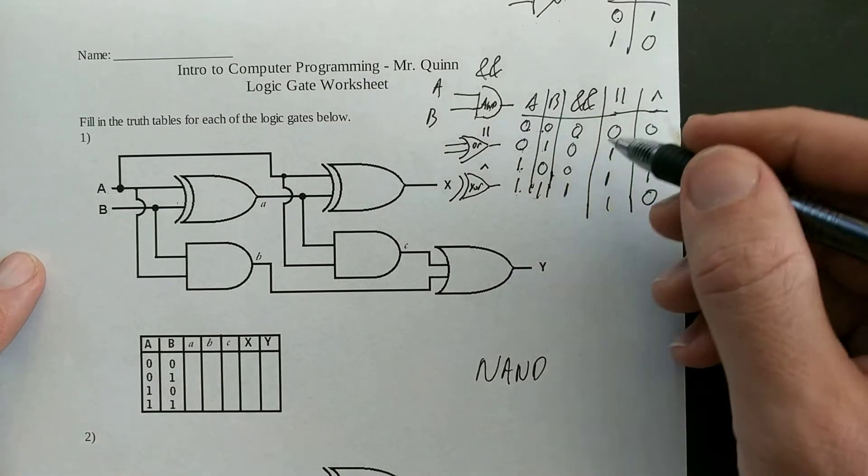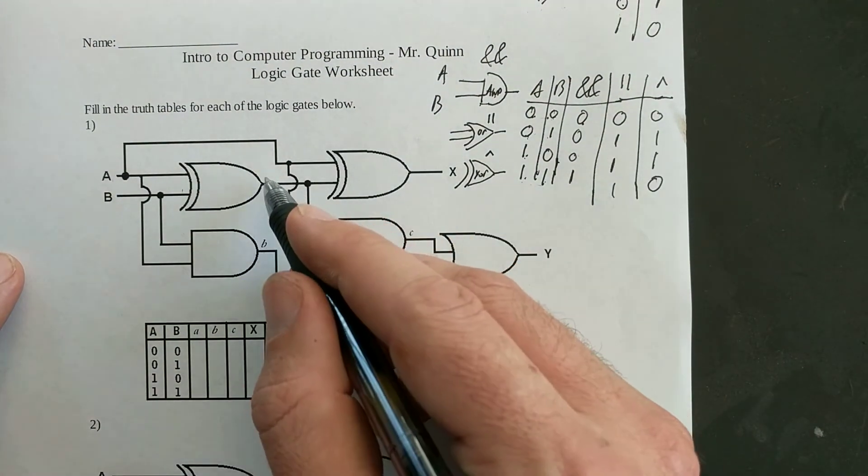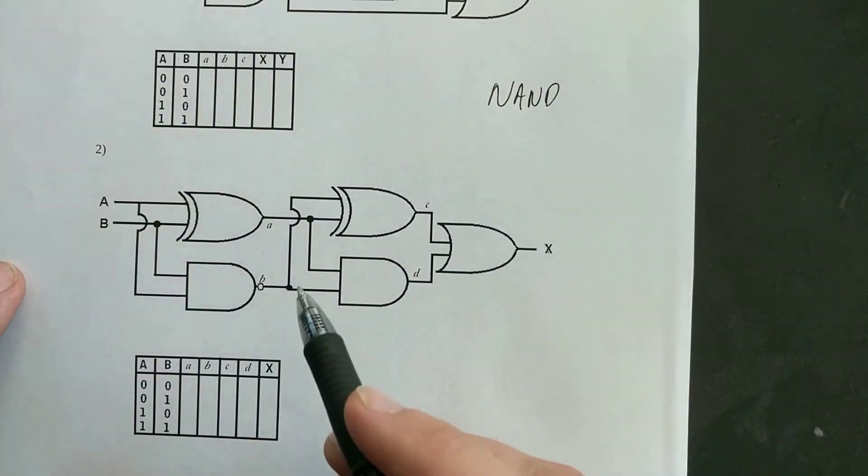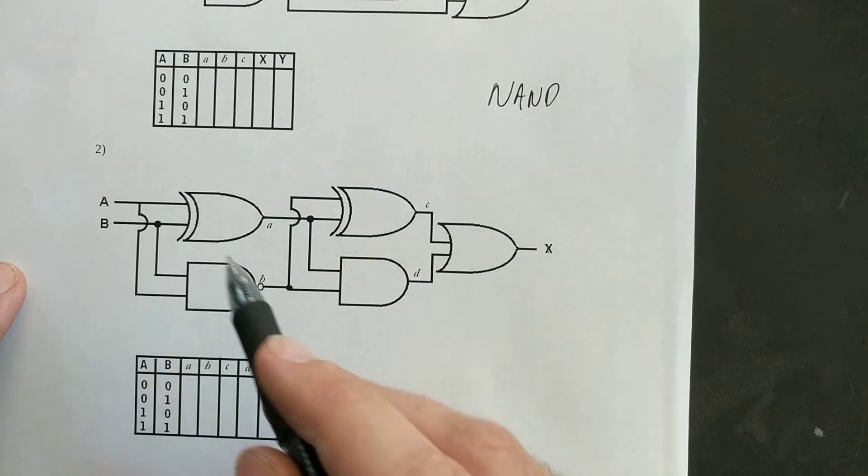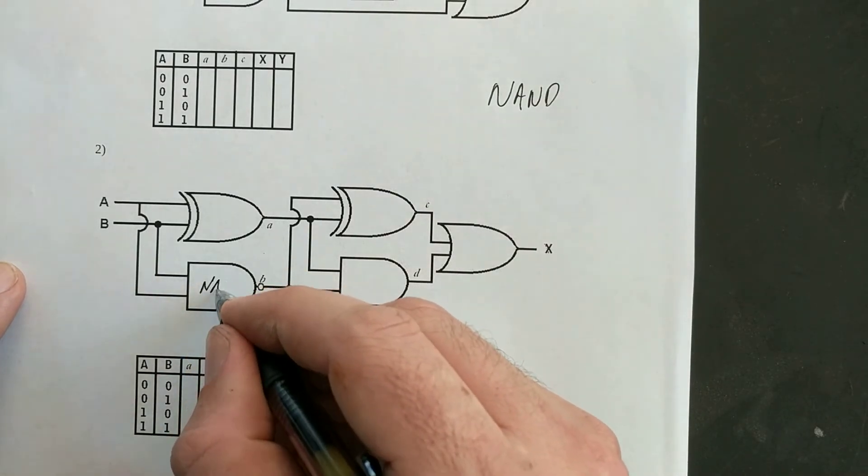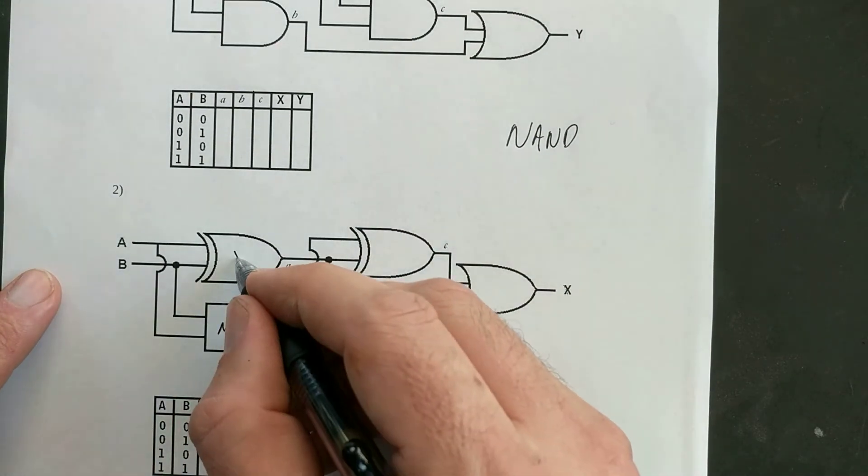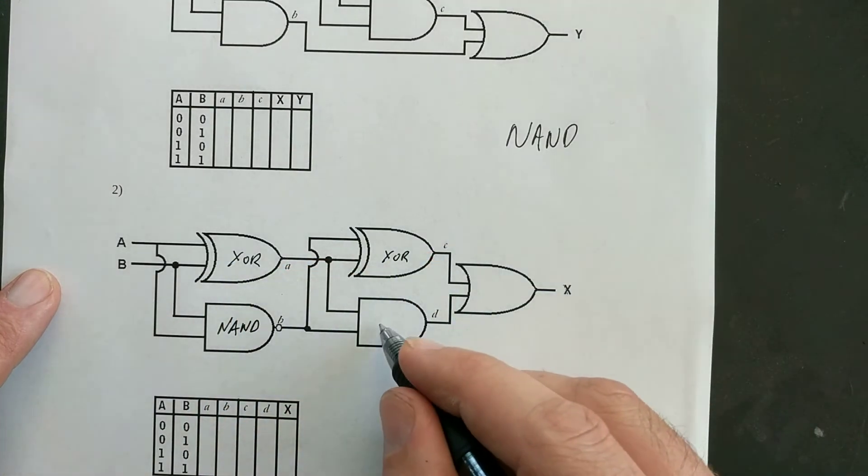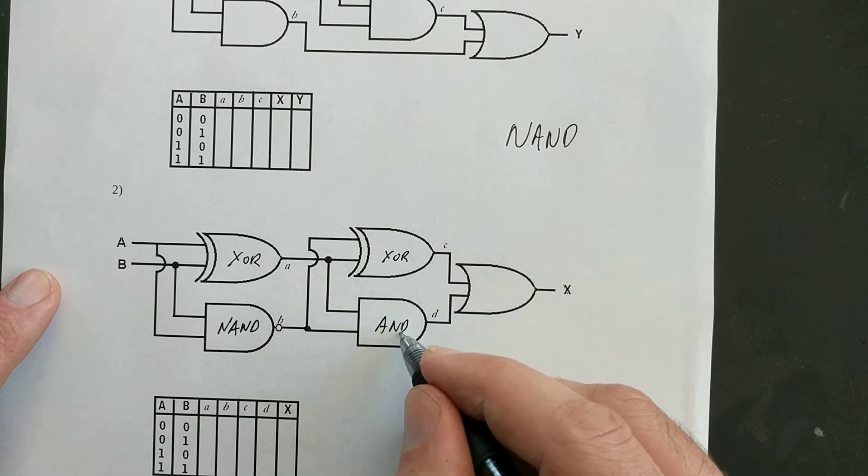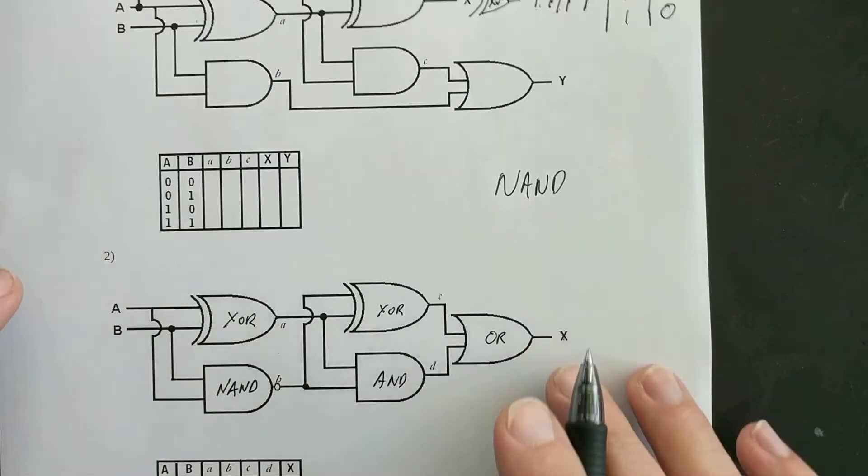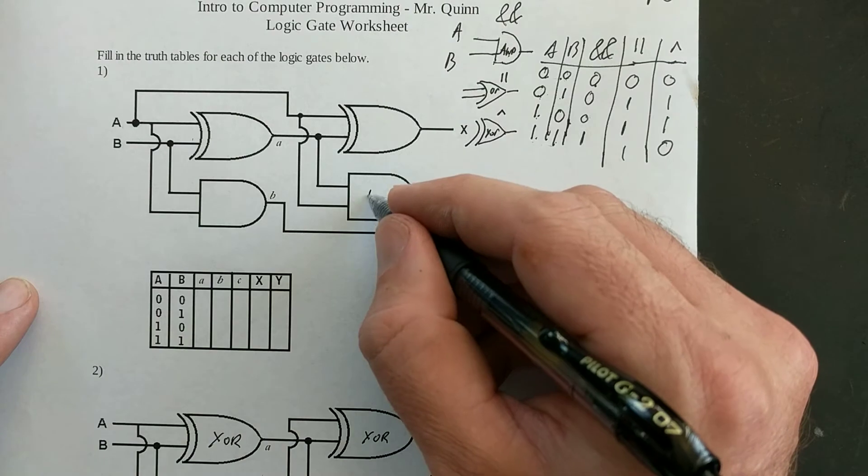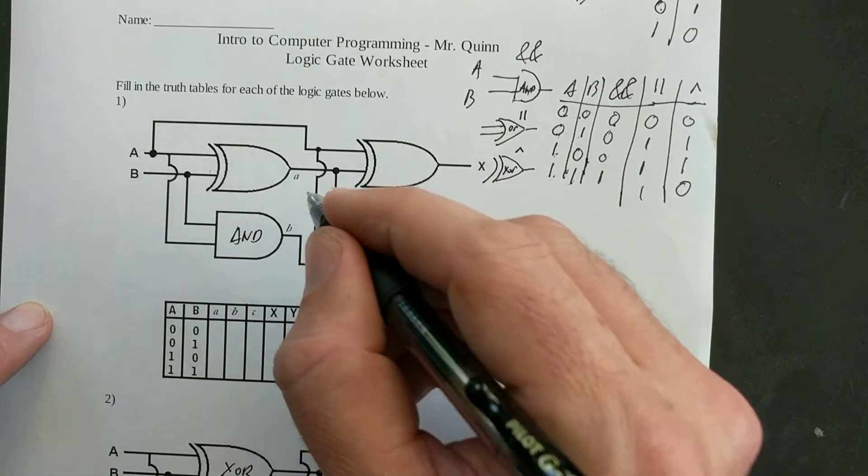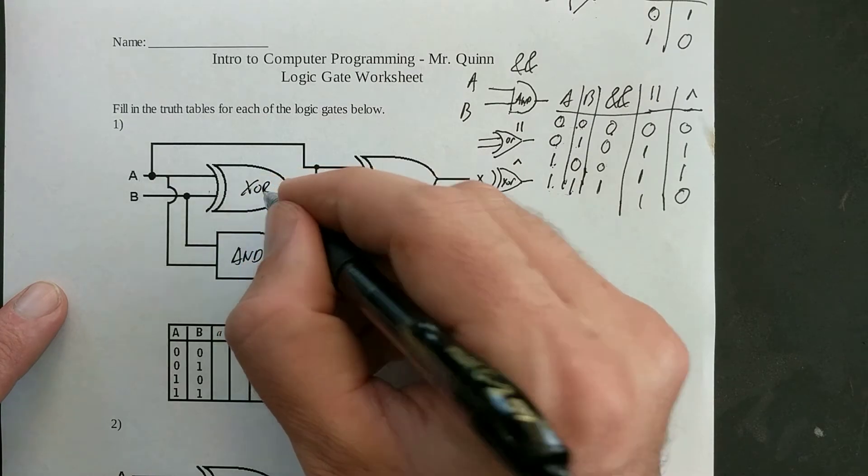Now the way you can tell if it's a NOT gate is if there's a little tiny circle right at the tip of one of the logic gates. And there's one example down here. So this is not an AND gate, this is a NAND gate. This is an XOR, XOR. This is an AND, this is an OR, this is an OR, an AND, an AND, an XOR, an XOR.